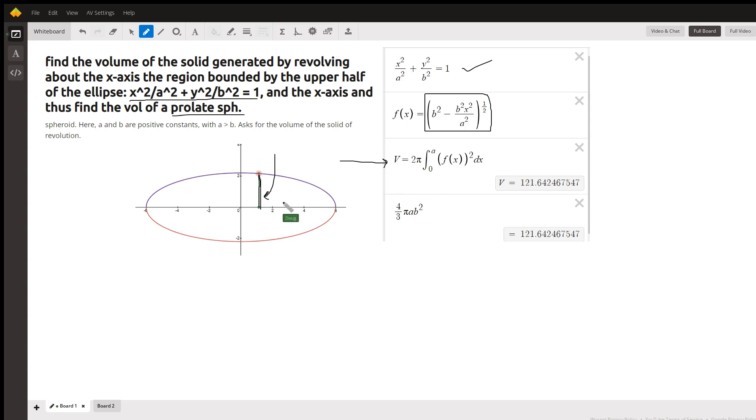We could go from negative a to a and say pi times the definite integral from negative a to a.